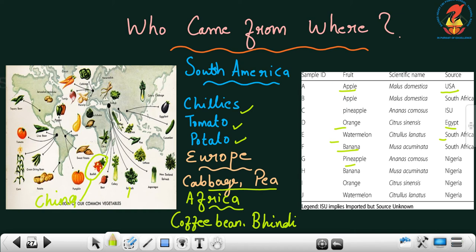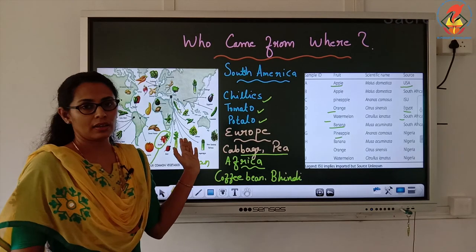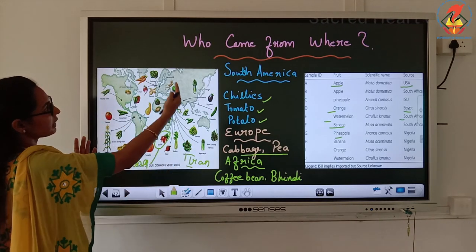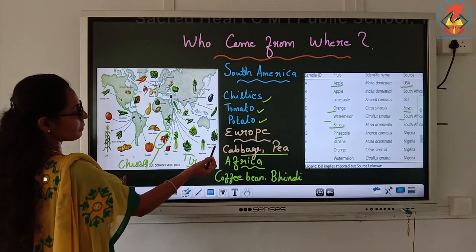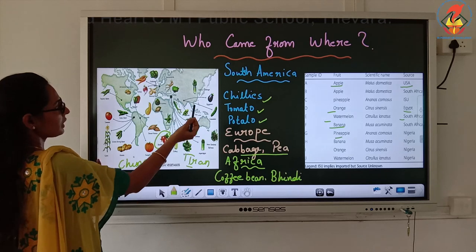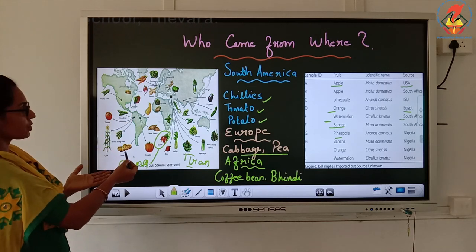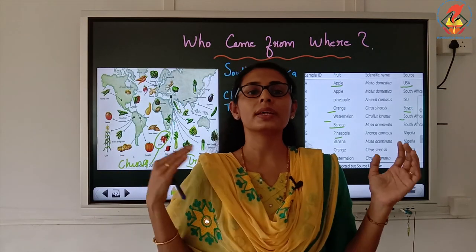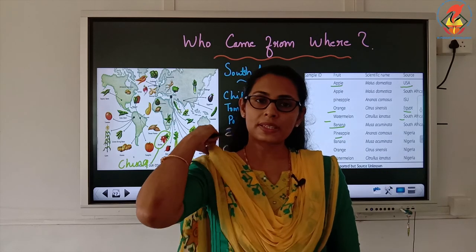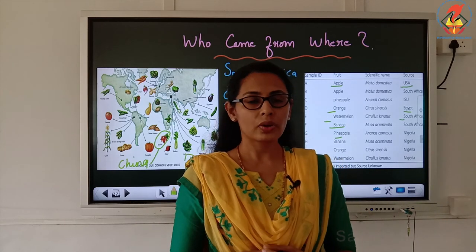Spinach came from Iran, and lettuce and beetroot also came from China or Iran. So likewise, if you look at different kinds of vegetables, they came from different parts of the world. Carrot, cabbage, tomato, corn, potato — these all belong to South American, African, and European products. We use all these different vegetables and fruits, but some of them are outsiders — they did not originally come from India.